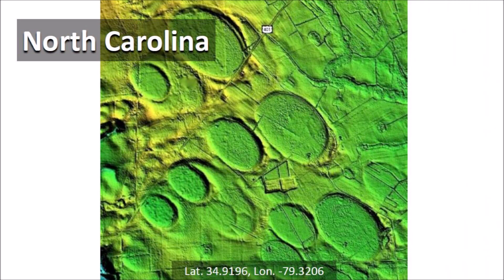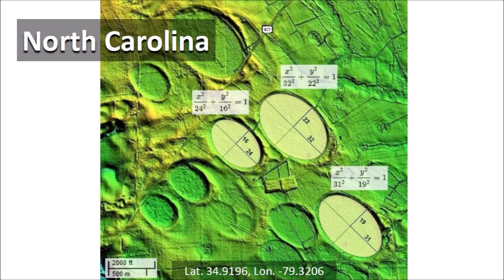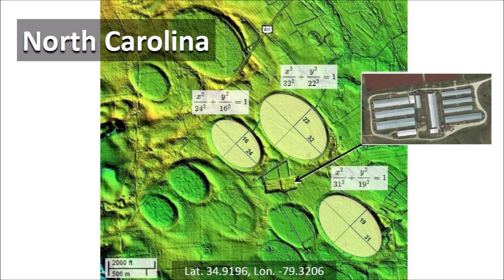This LiDAR image of Carolina Bays near Bowmore, North Carolina has examples of bays that overlap in various ways. The thicker rims on the southeast end of the basins can be clearly seen. Time after time, we can see that well-preserved Carolina Bays of different sizes can be fitted with ellipses that closely follow the rims of the structures. The enormous size of the basins can be appreciated by comparing them to the rectangular feature, which is a complex of barns measuring about 680 meters.